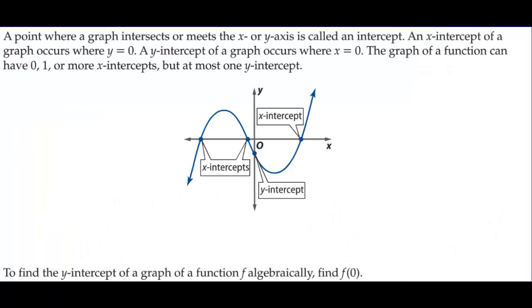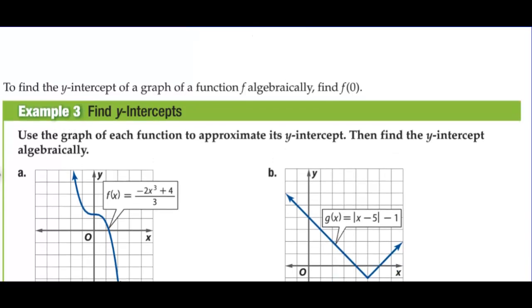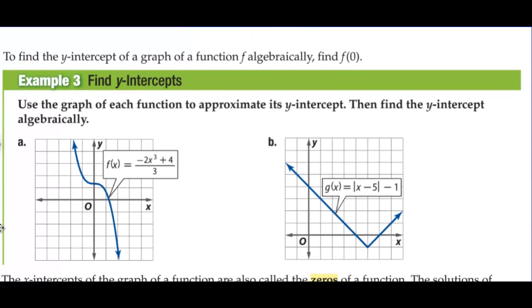A point where a graph intersects or meets the x or y axis is called an intercept. An x-intercept of a graph occurs where y equals 0. A y-intercept of a graph occurs where x equals 0. The graph of a function can have 0, 1, or more x-intercepts, but at most one y-intercept. To find the y-intercept of a graph of function f algebraically, find f of 0.